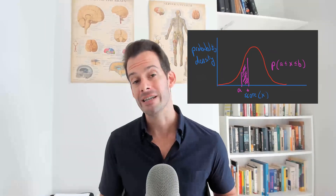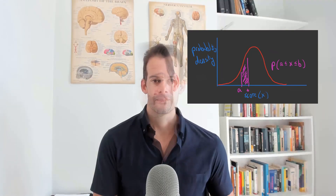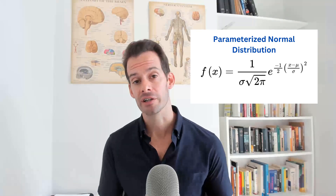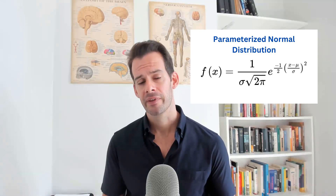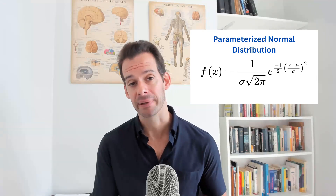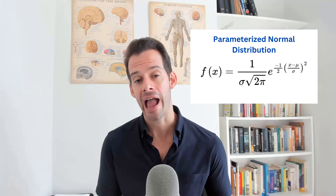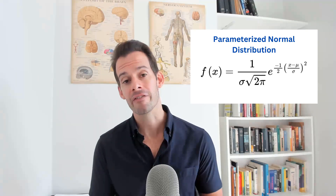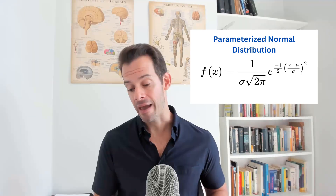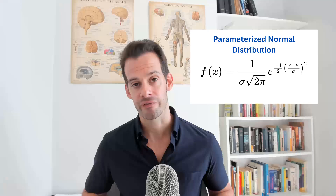The most common way to do this is to use the equation for a normal distribution. We put in our estimated parameters for the population — mu and sigma — and then we can put in any value for X, and this tells us the height of the probability density function at that point. That means we can generate this curve across any possible range of values for X.